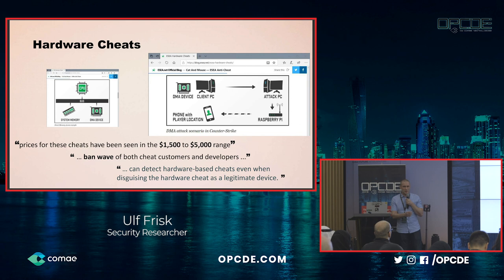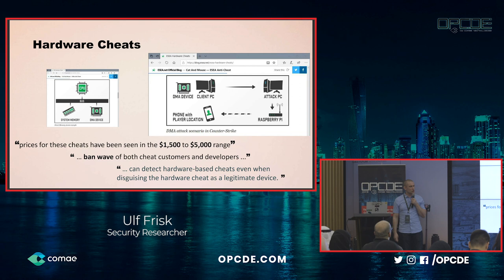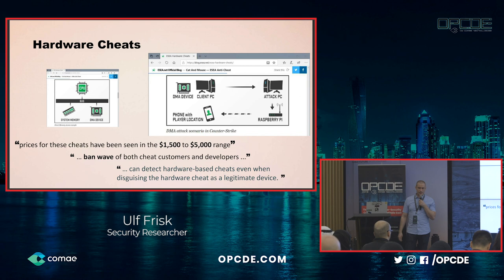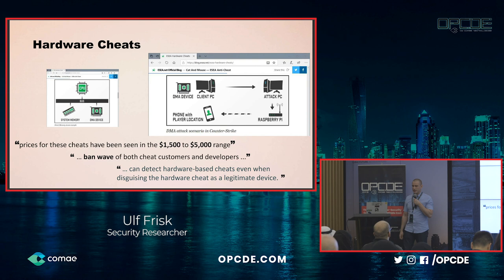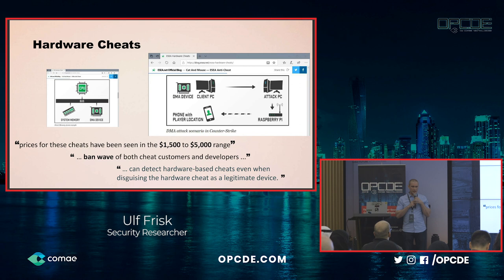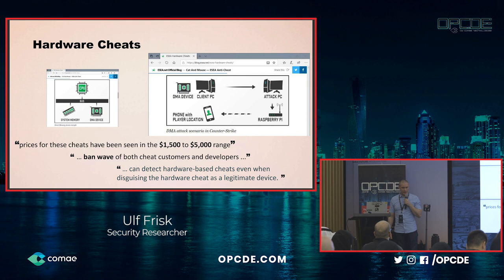They claimed that prices for these cheats had been selling in the range of $1,500 to $5,000. When they started detection, it was really simple initially since most people had been downloading my default FPGA firmware bitstream, which had hard-coded vendor IDs and device IDs. So if you had them in your gaming system, you were probably a cheater — resulting in bans of both cheat customers and developers. They now also claim to be able to detect hardware-based cheats even when disguising the cheat as a legitimate device, by looking for other tell-tale signs not easily changed by the cheater.